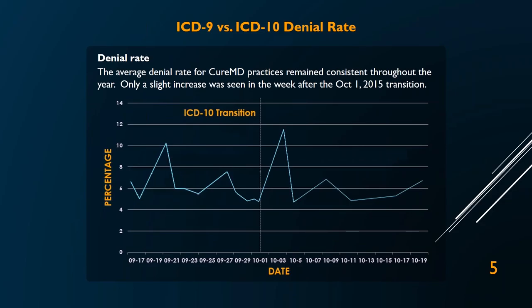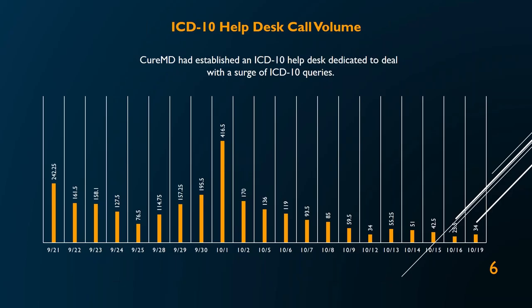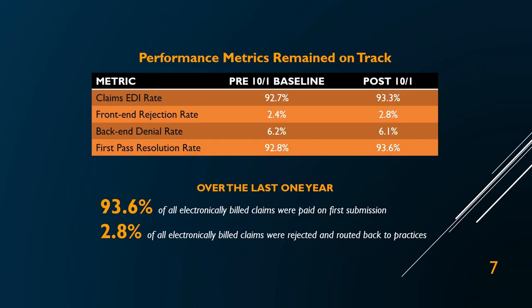This year, we also have additional staff available to assist you on the 1st if needed, and we anticipate this change will go through even smoother. Our performance metrics show that the EDI rate — the number of claims submitted electronically — has increased a little. Rejection rates from within CureConnect and our claim scrubber have been fairly stable. Overall, claim denial rates are also very stable. This change hasn't been the huge disruptor of claims and revenue cycle that we expected.